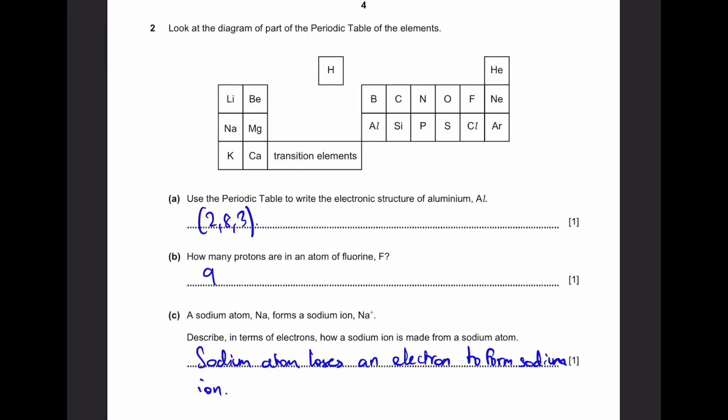Question 2. Look at the diagram of part of the periodic table of elements. Part A: Use the periodic table to write the electronic structure of aluminium, AL. If you remember, the atomic number of aluminium is 13. Even if you don't remember, you can just count. In the first electron shell, you can only have 2 electrons. In the second electron shell, maximum is 8. If you add them up, it's still not 13, it's 10. So you have to add 3 more in the third electron shell to make it 13. So the answer is 2, 8, 3.